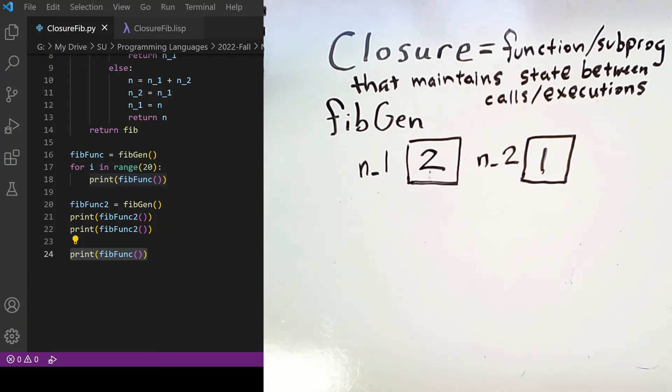Or more accurately, we've started a new copy of the sequence, because I can go back to calling the original fibfunc and we'll see that we actually get the next value that we had in our first sequence of outputs.